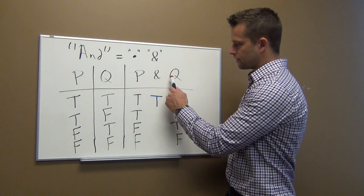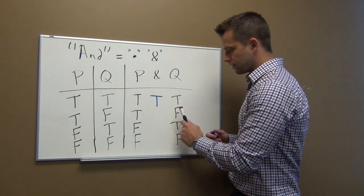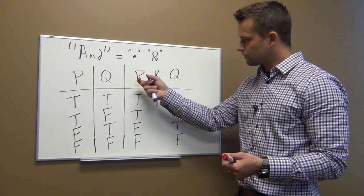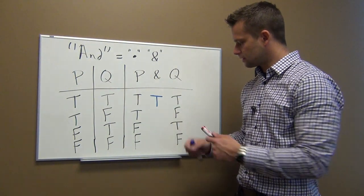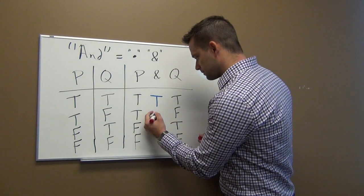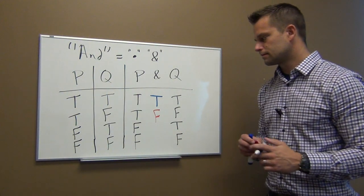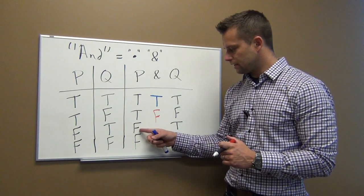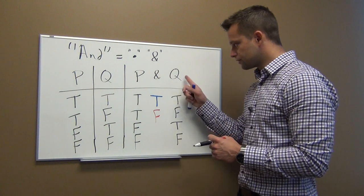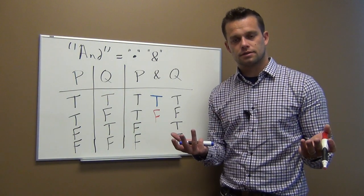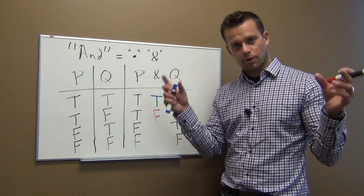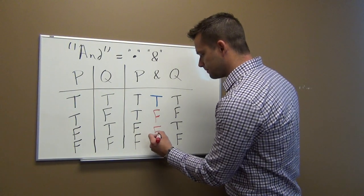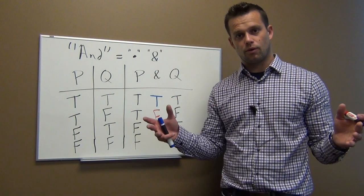Now, what if I tell you I have a brother and I have a sister, and it's true that I have a brother but false that I have a sister? Then I'm lying, so the overall truth value is false. What if it's false that I have a brother but true that I have a sister? I'm still lying, because in an AND statement we need both sides to be true for the statement to be true. If I'm lying about one thing and I use the word 'and,' then I'm lying about the whole thing.